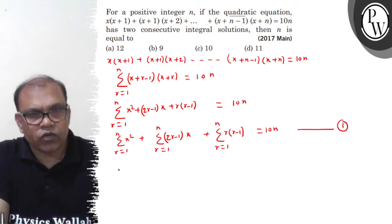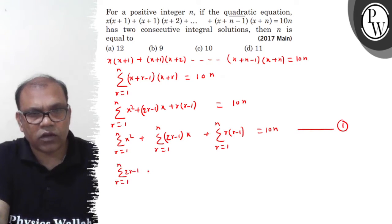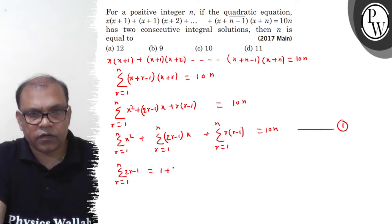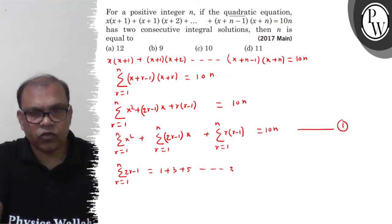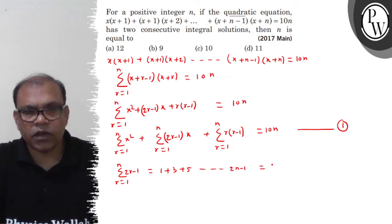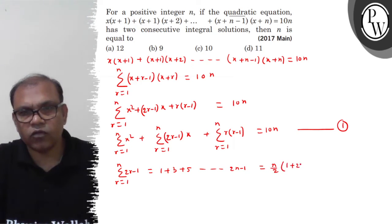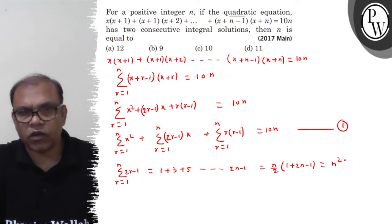Now, summation of (2r-1) for r = 1 to n gives 1 + 3 + 5 + ... + (2n-1). This is an AP with n terms. Using n/2 × (first + last) = n/2 × (1 + 2n-1), this equals n².